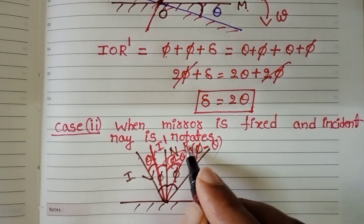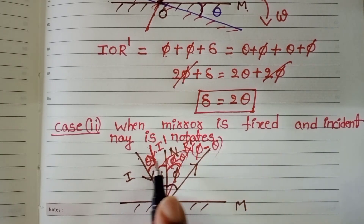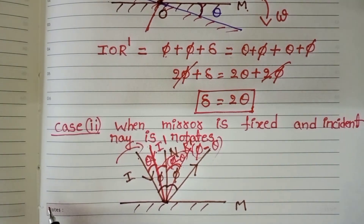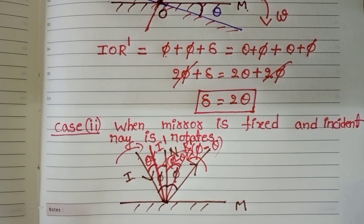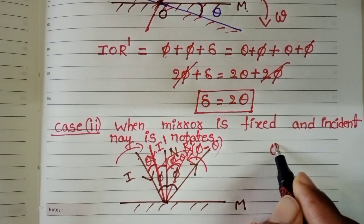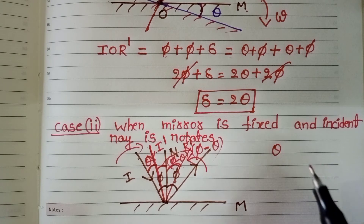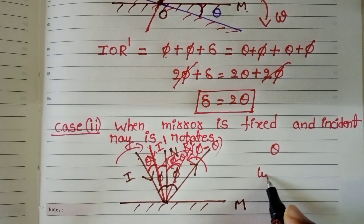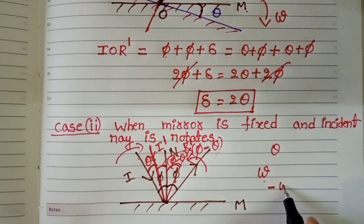Then, what about the rotation of the reflected ray, and in which direction does it rotate? The incident ray rotates in one direction, but the reflected ray rotates in the opposite direction. The angle of rotation of the reflected ray is also theta, but in the opposite direction to the rotation of the incident ray. If the angular velocity of the incident ray is omega, then the angular velocity of the reflected ray becomes minus omega.